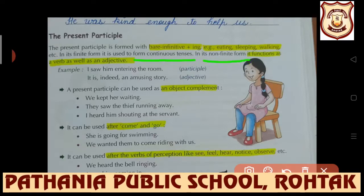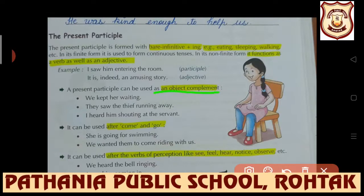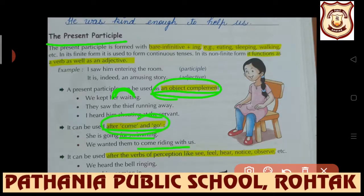But in its non-finite form, the present participle functions as a verb or as an adjective. Example: 'I saw him entering the room.' 'It is indeed an amusing story' - 'amusing' is describing 'story', so it is used as an adjective. A present participle can be used as an object complement: 'We kept her waiting' - 'waiting' is related to 'her', so 'her' is the object. It can also be used after 'come' and 'go': 'She is going swimming', 'We wanted them to come riding with us.'